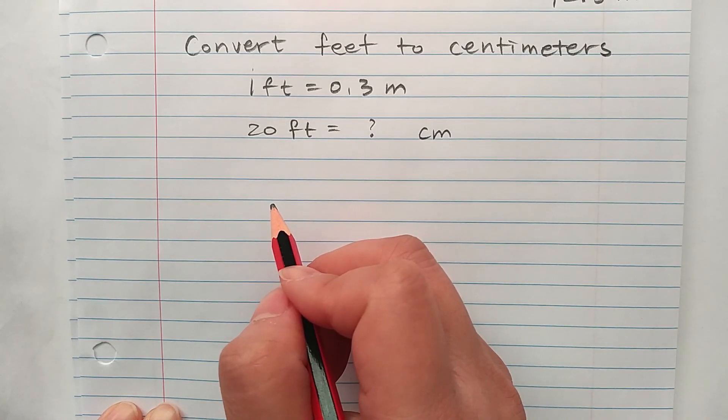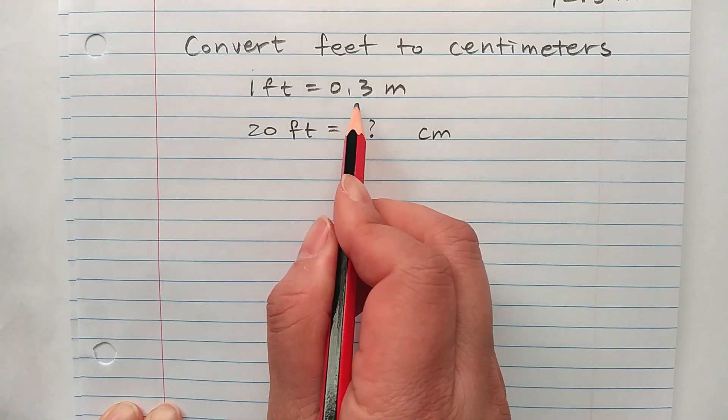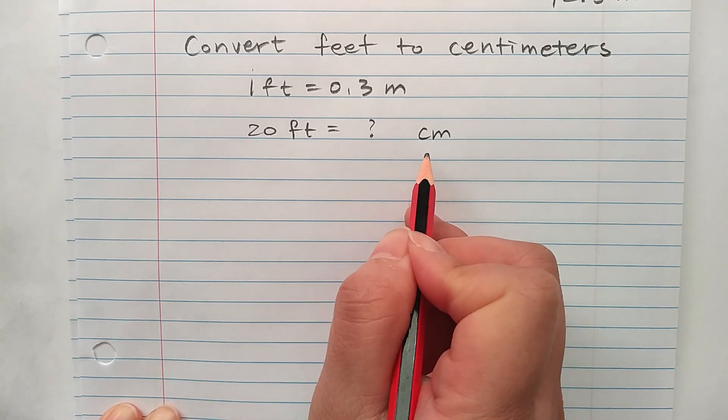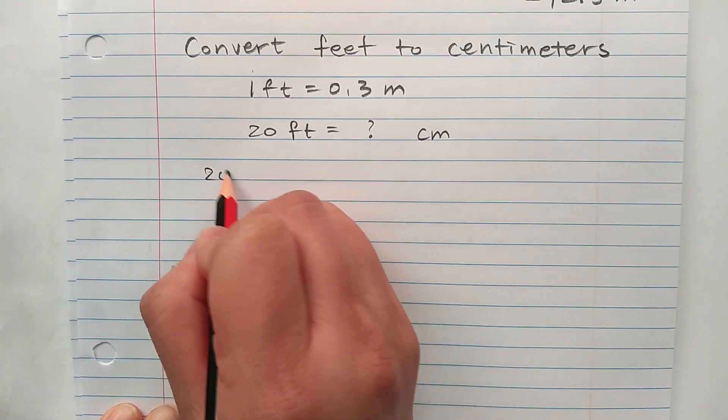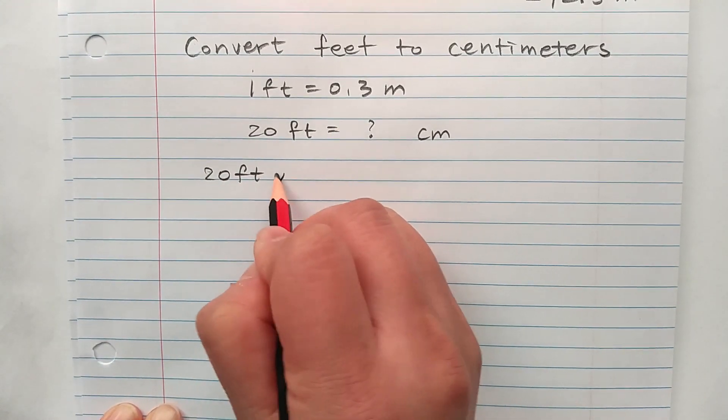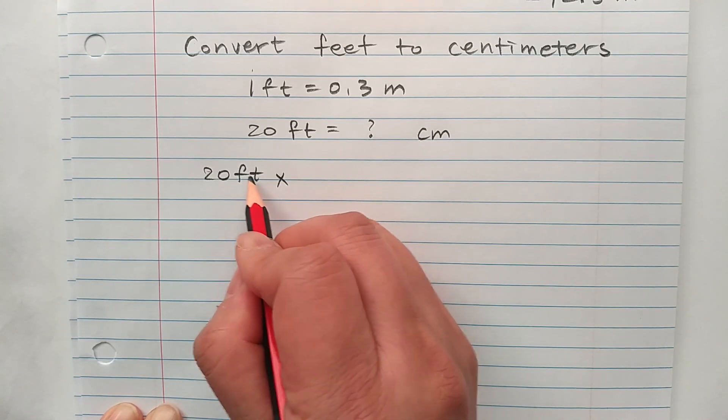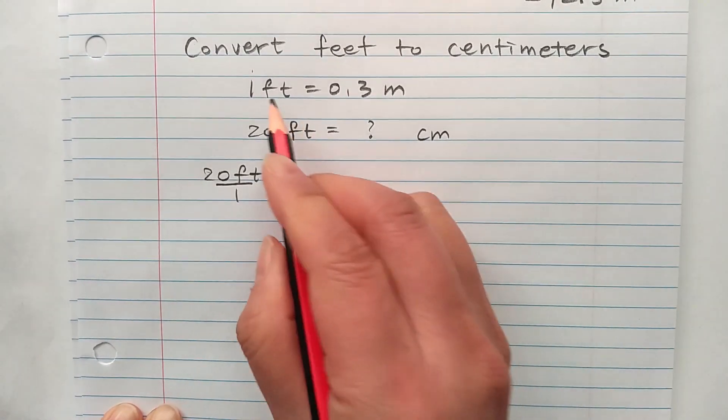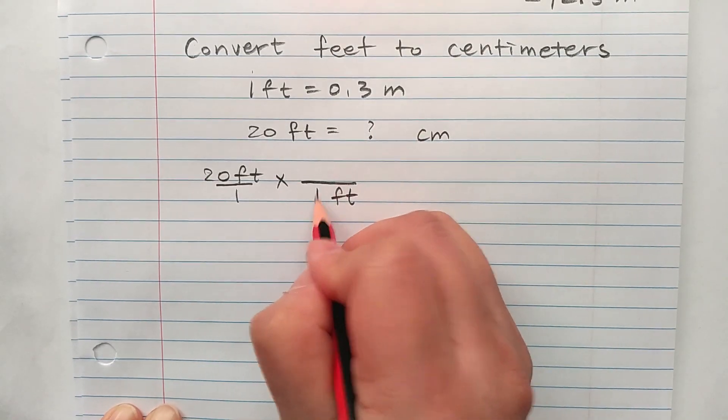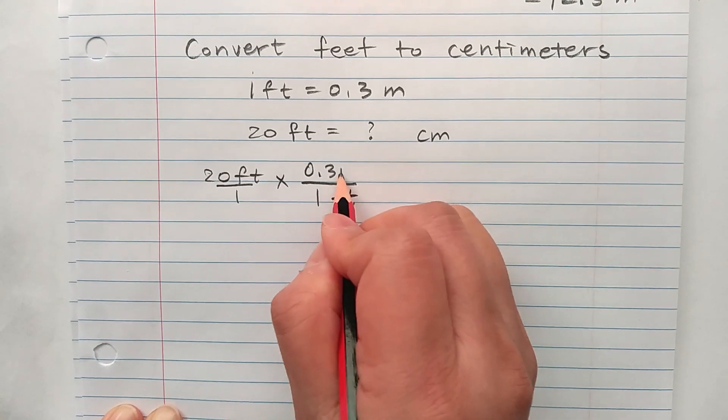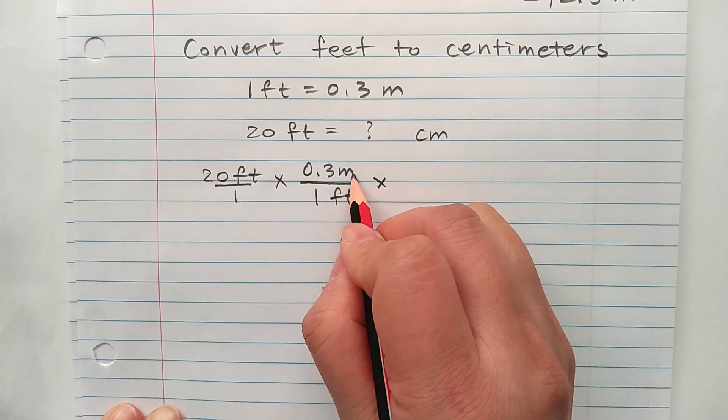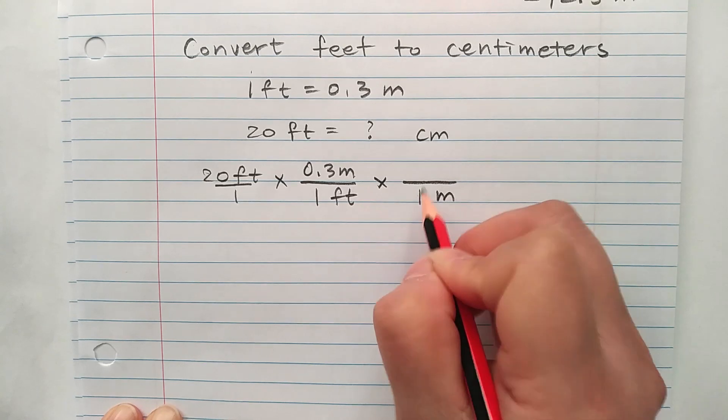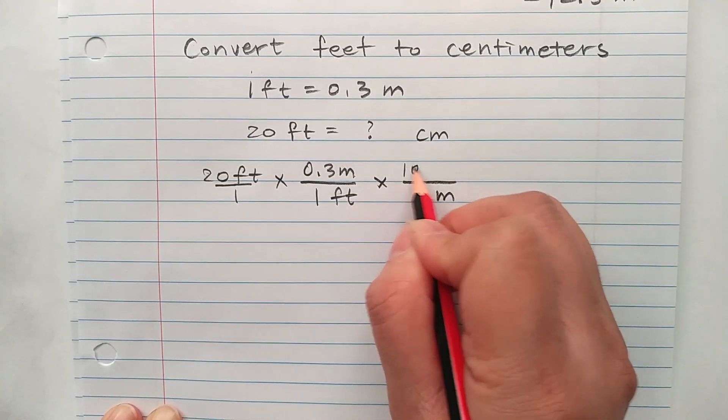Let's convert feet to centimeters. One foot is 0.3 meters. 20 feet are how many centimeters? Again let's do 20 feet times bunch of ones. Feet is up here. 20 feet over 1. So you want to have feet down here. We have 1 foot is equal to 0.3 meters. And meter is up here. So we want to have meter down here. 1 meter is how many centimeters? 100 centimeters.